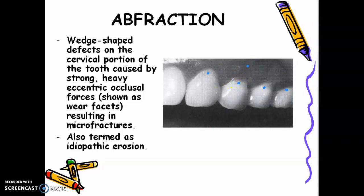The occlusal forces during mastication — for example, crushing ice with your teeth — cause microfractures. Eventually the patient may say, 'Doc, I just ate bread and my tooth broke,' because there had been microfractures even before. Abfraction is also termed idiopathic erosion, meaning the exact cause is not known — idiopathic means you don't know the exact cause.